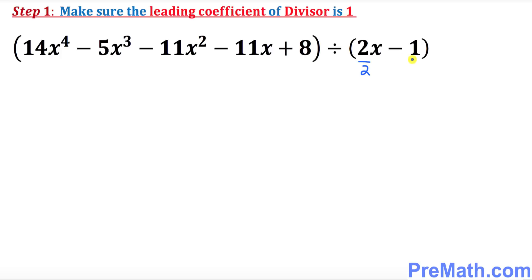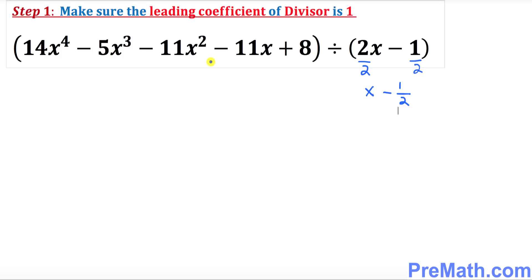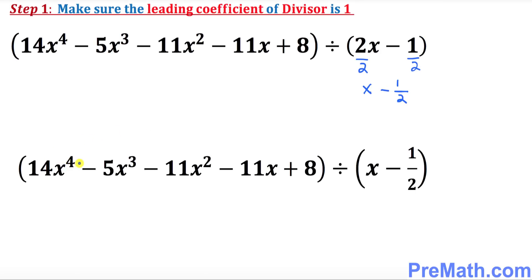If you divide the divisor by 2, you must divide it by 2 as well, so it simply becomes X minus 1 over 2. Just keep in mind we are not going to divide the dividend by 2 at this point — we are going to take care of that later on.